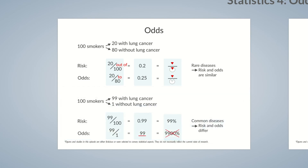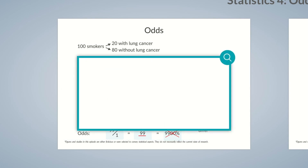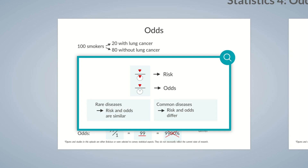Let's briefly summarize what we've learned about odds in this episode. Using a pie chart, you can see that the risk of developing a disease is calculated as a proportion of the group examined. In contrast, the odds value is calculated by dividing the number of individuals with the disease by the number of individuals without the disease. The risk and odds values are very similar when it comes to rare diseases. The more common the disease in the group examined, the larger the difference between the odds and risk values.